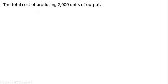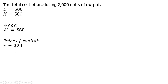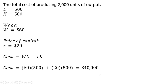What is the total cost of producing 2,000 units of output? Given our input prices, cost equals the wage times units of labor plus the price of capital times units of capital. So we can produce 2,000 units of output at a cost of $40,000.